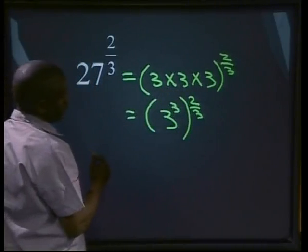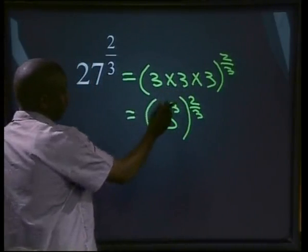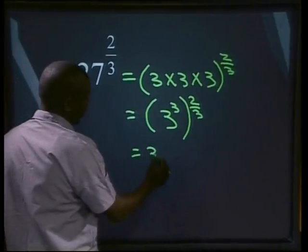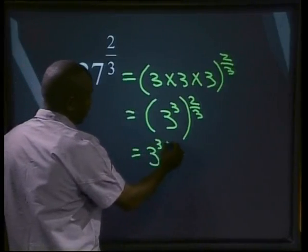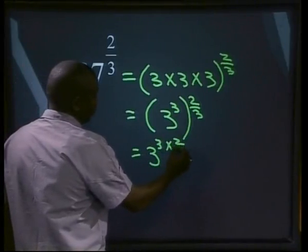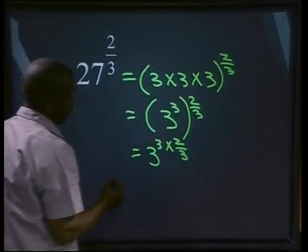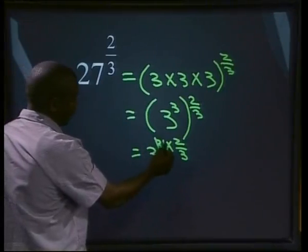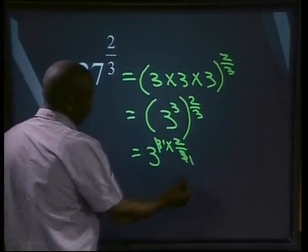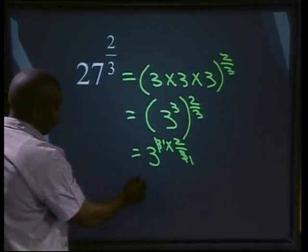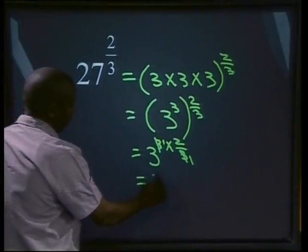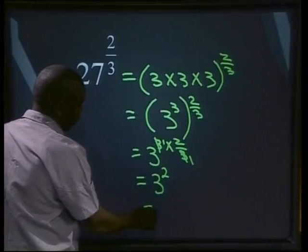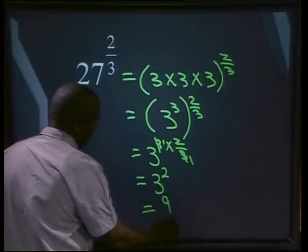Let's use one of our laws — raising a power to another power. That will be the same as 3 to the power 3 times 2 over 3. 3 into 3 goes once, into 3 it goes once. So therefore, that means we have 3 to the power of 2, which will be equals to 9.